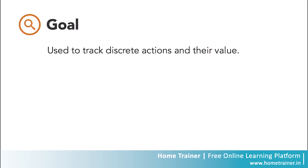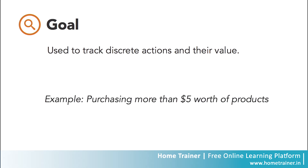From there, you might set up a goal. This is a configuration setting that allows you to track the valuable actions happening on your site. Goals allow you to measure how well you are fulfilling your business objectives. You can set up individual goals to track discrete actions, like getting people to visit at least five pages of your site or spend a certain amount of money on your products. Every time a user completes a goal, a conversion is logged into your Google Analytics account.